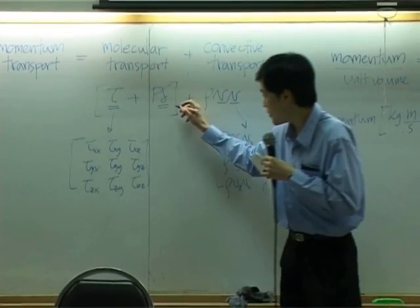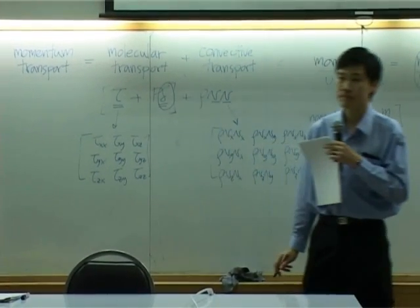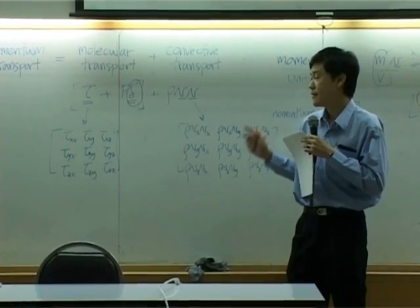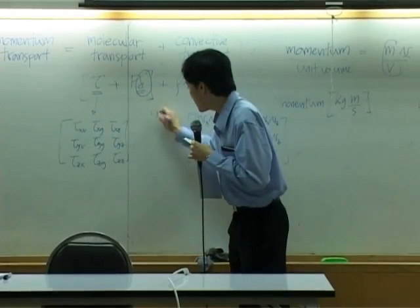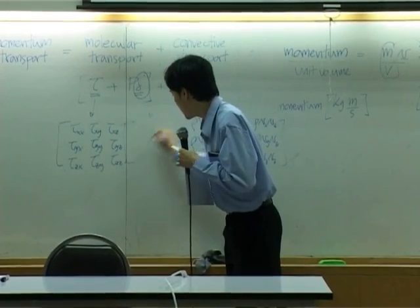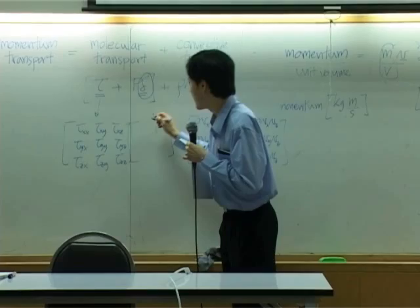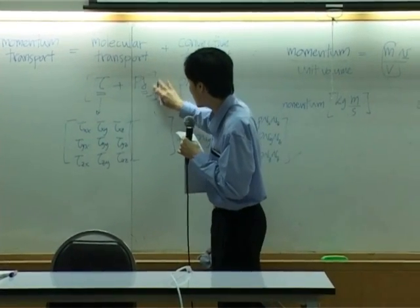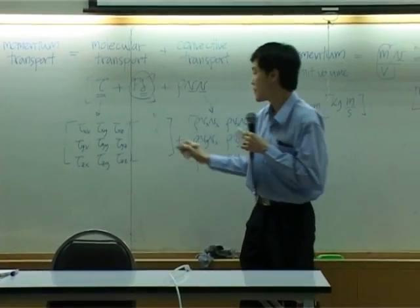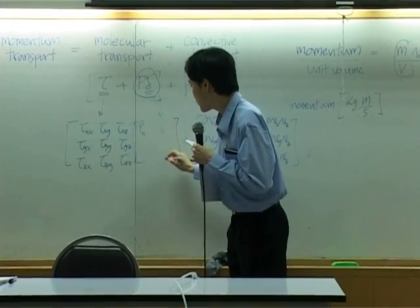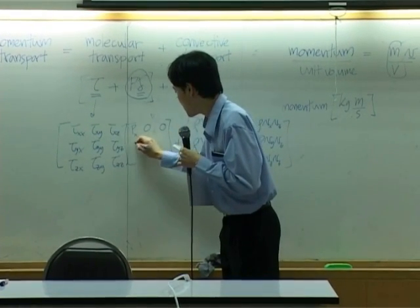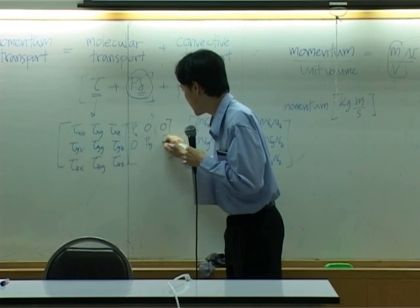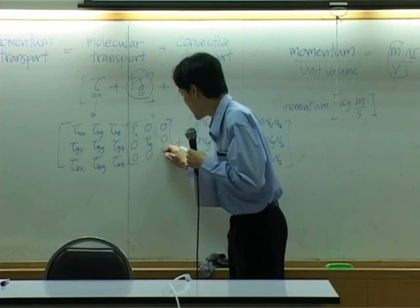What about del here? You know, del is supposed to be written as, if you multiply pressure with del, the whole thing here, you will have pressure in x direction, 0, 0, 0 py, and 0 pz here.